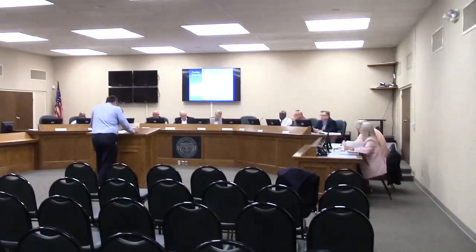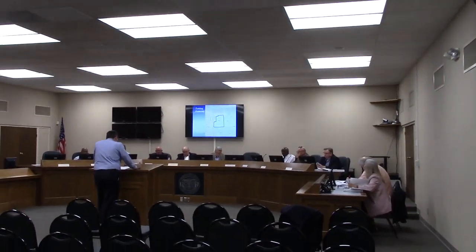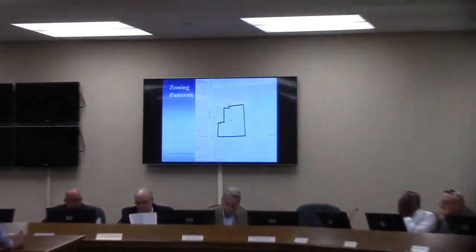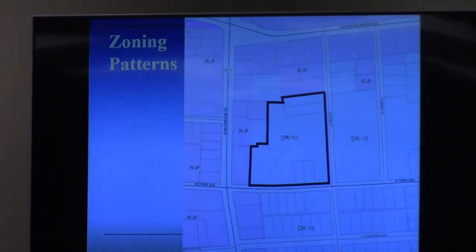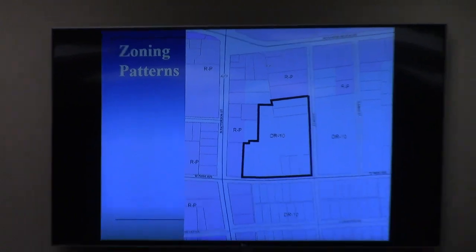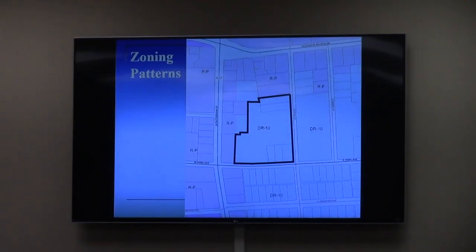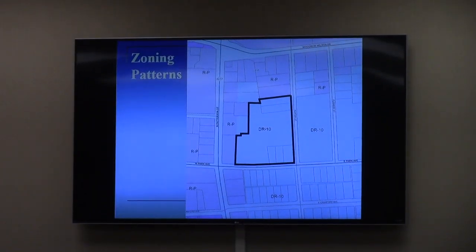The property is located at the corner of East Park Avenue and North Patterson, backing up on Slater Street. This is an older residential neighborhood, now in transition with a mixture of residential, professional, and light commercial uses.